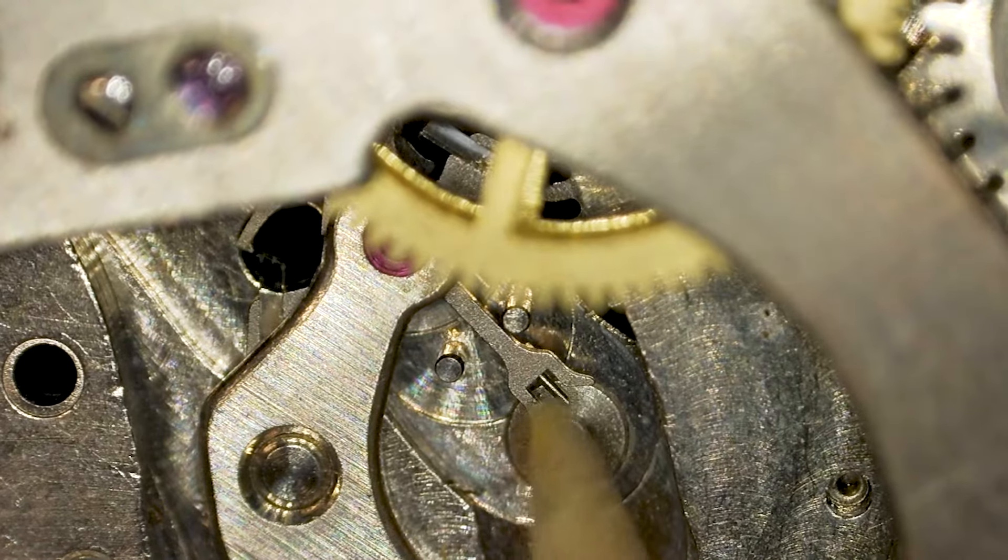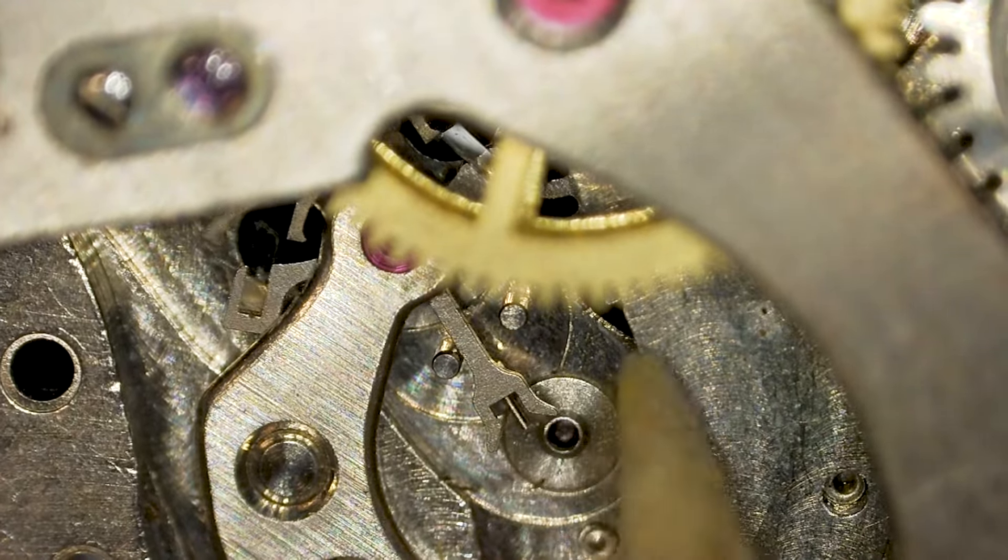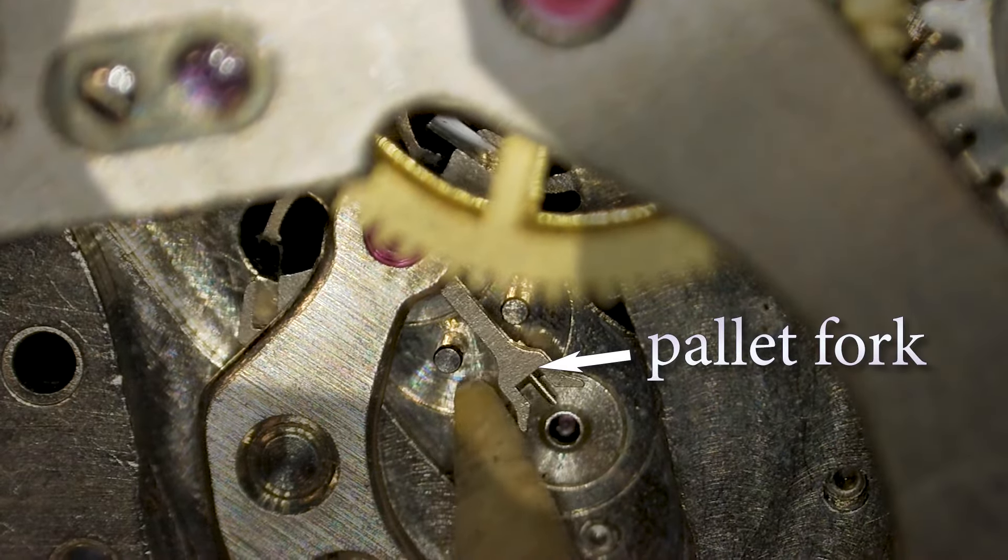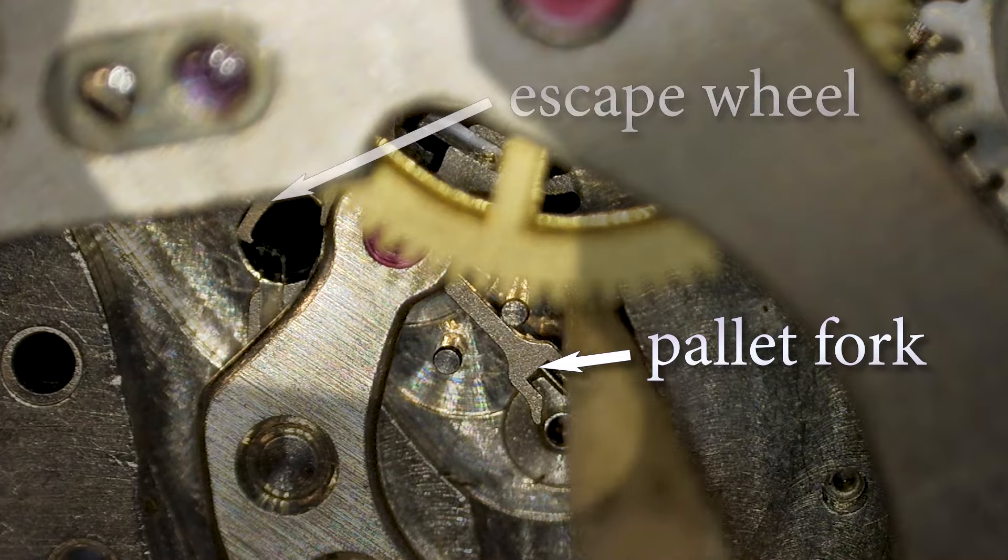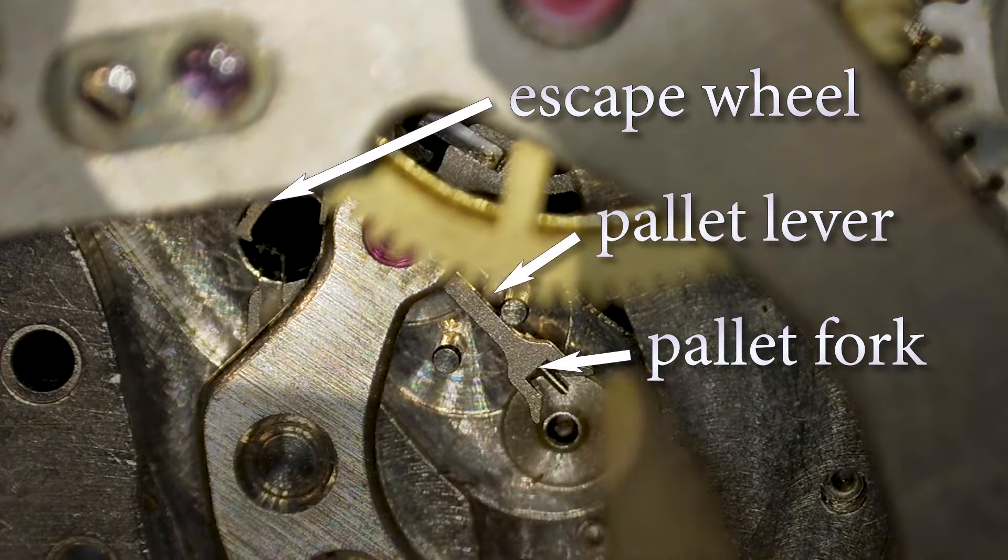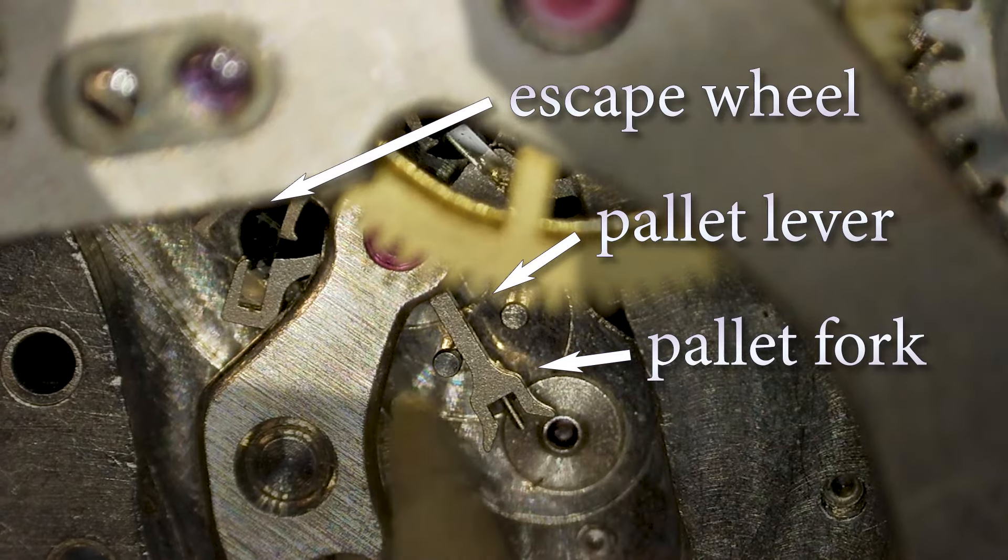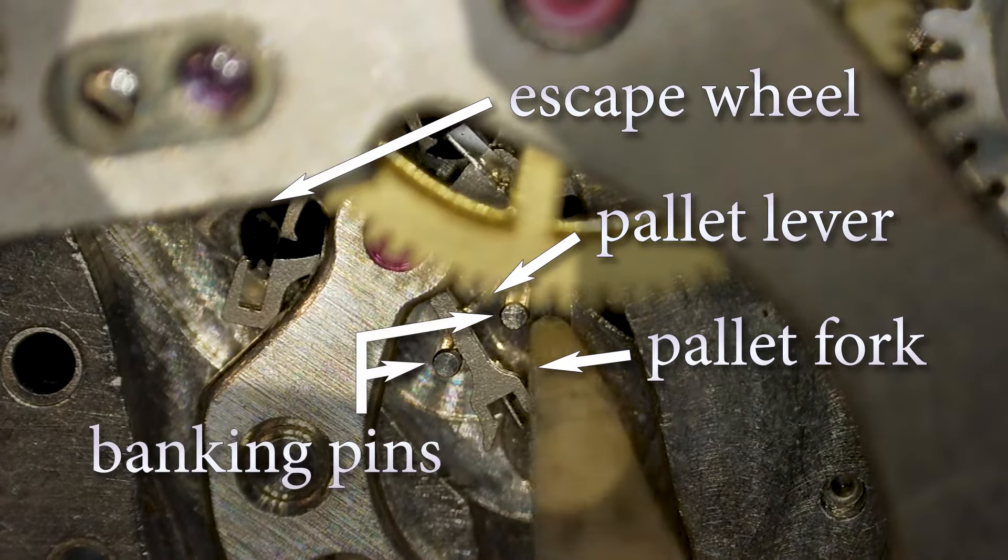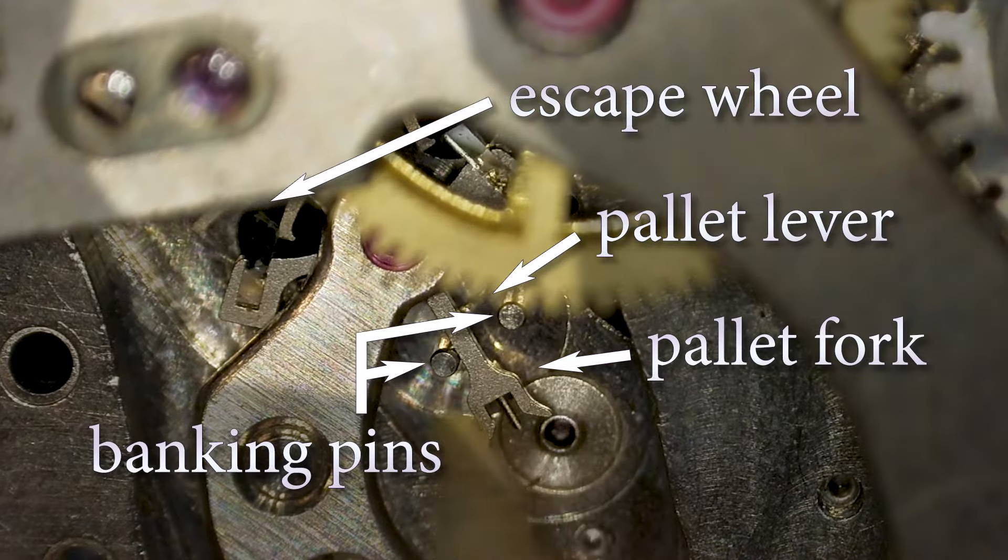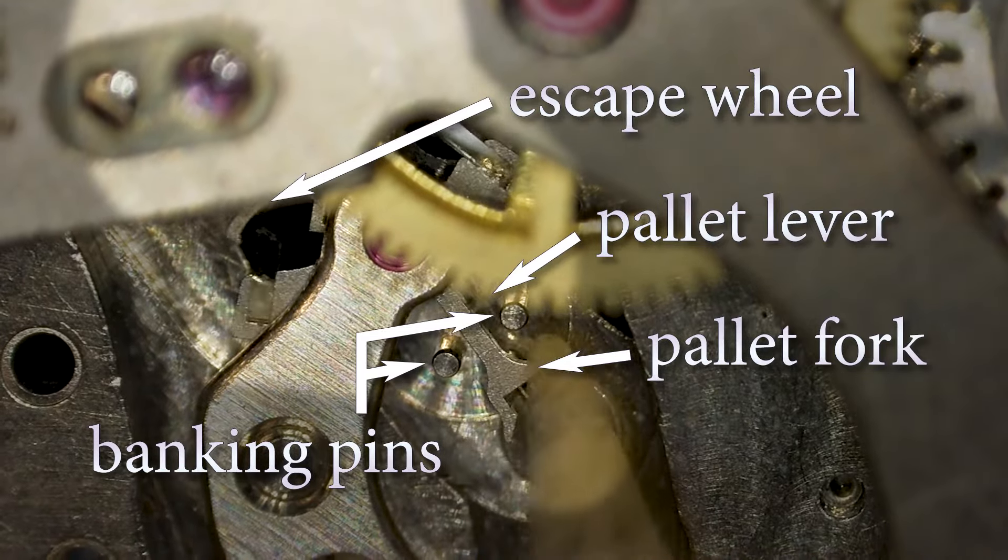Back on the microscope, with the balance out of the way and a slight wind in the spring, we can see if the pallet fork is moving back and forth properly and allowing the escape wheel to advance. In a healthy watch, the pallet lever will snap back and forth decisively between the banking pins. The back and forth motion of the pallet is what gives a wristwatch its tick-tock sound.